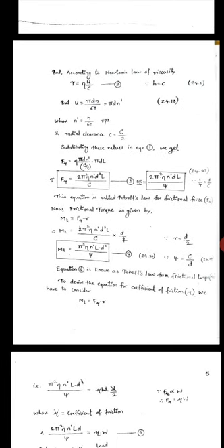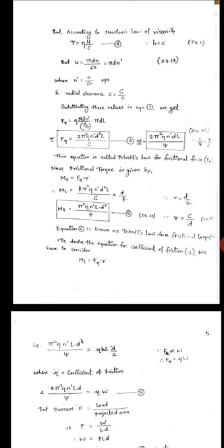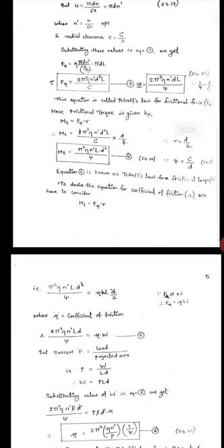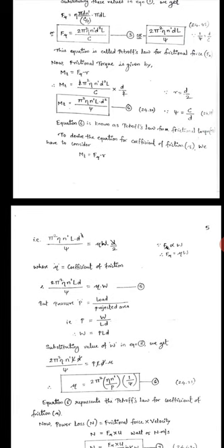Now to derive the equation for coefficient of friction mu, we have M_T equals F_mu times R. F_mu is mu times W, where W is the radial load and mu is the coefficient of friction. So 2 pi square nu N dash L D by C, equation 5. W is P L D. So from equation 3 and 5 we get 2 pi nu N dash L D by P L D. So mu is 2 pi square N dash nu by P C, equation 6. Equation 6 represents Petroff's equation for coefficient of friction mu.